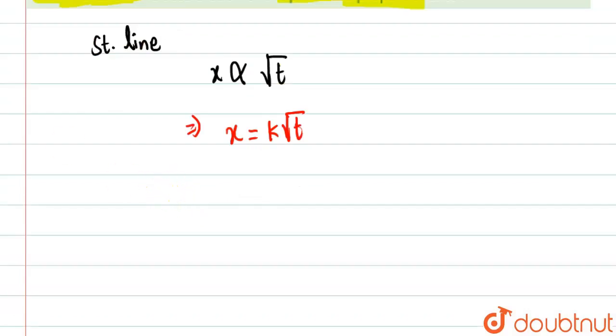So we all know that velocity is basically given by dx by dt. Firstly, one thing more we need to do over here is that we have to write k t to the power 1 by 2, so as to get a clear vision.